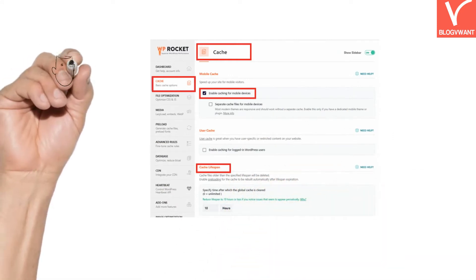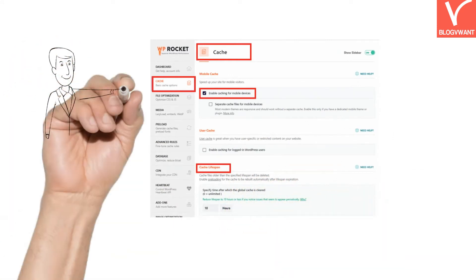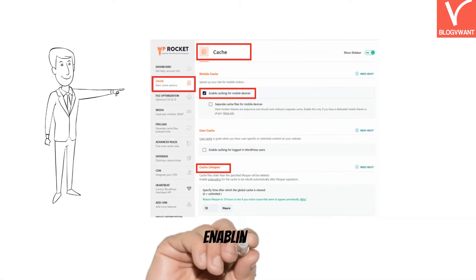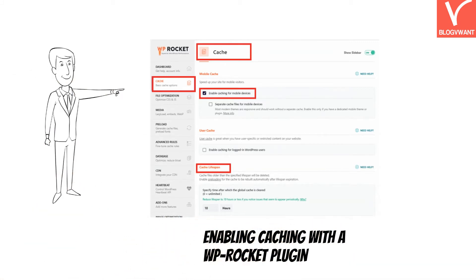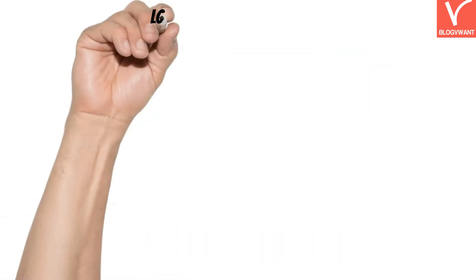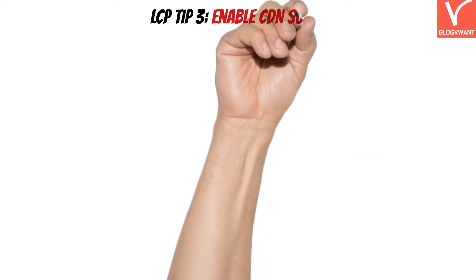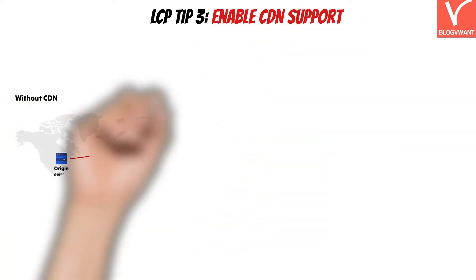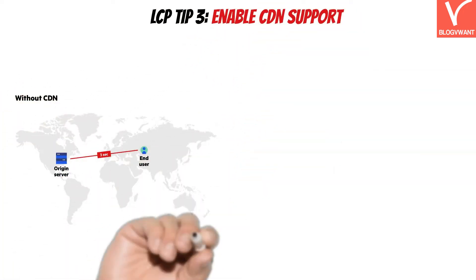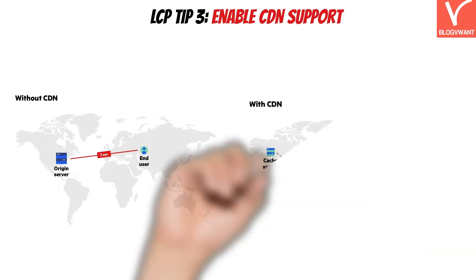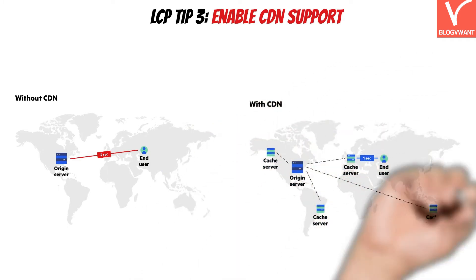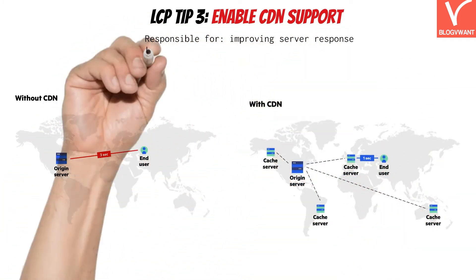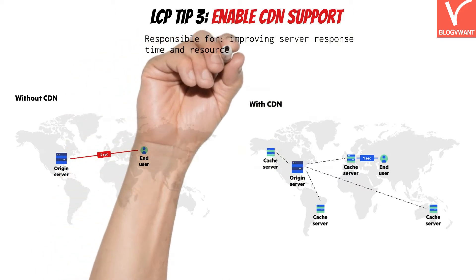The process to enable caching with WP Rocket is simple: just navigate to the cache section and turn on the feature. LCP Tip 3: Enable CDN support. CDN is the content delivery network that helps to reduce or shorten the time between user requests and server response, which improves the website LCP score.